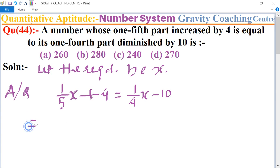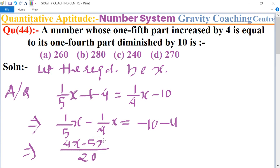And now we separate the variable part and constant part. So (1/5)x minus (1/4)x equals minus 10 minus 4. The LCM is 20, and 4x minus 5x equals minus 14.